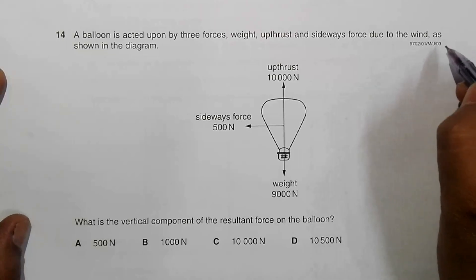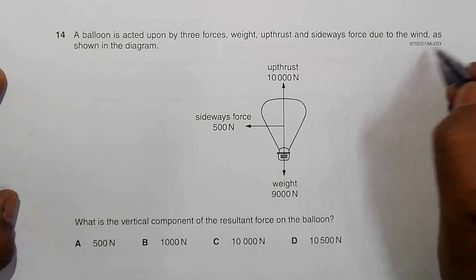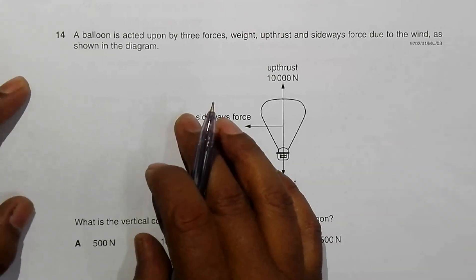Hello folks, this is the question of 2003 May, June, paper 1. They didn't have a 1-1, 1-2 or 1-3 at that time. And it's question number 14.